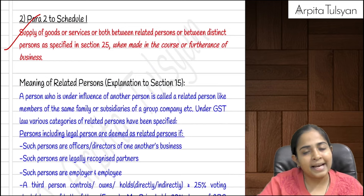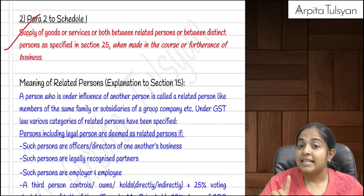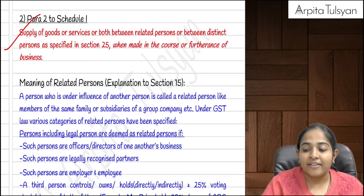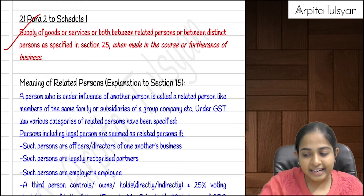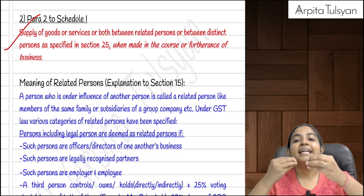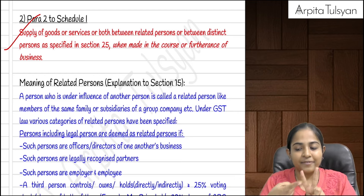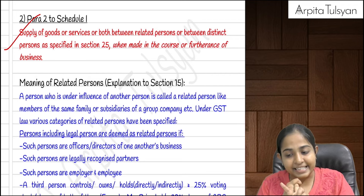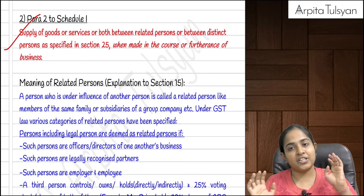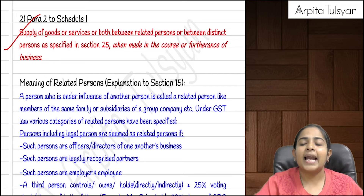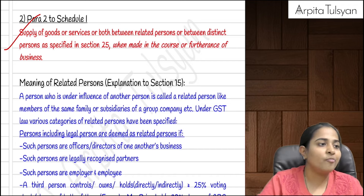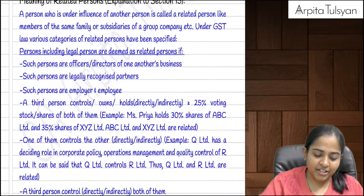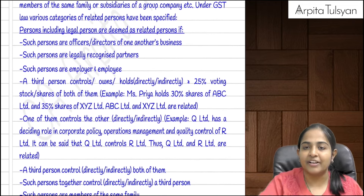Schedule 1, Para 2: supply of goods or services for no consideration between related persons, or between distinct persons, done in the course or furtherance of business, is deemed a supply. Related persons include: partners in a partnership firm, employer and employee, a third person holding at least 25% voting power in two entities making those entities related, same family members, and a person influencing or controlling another.